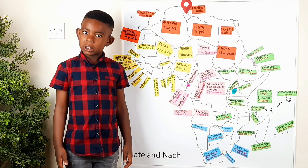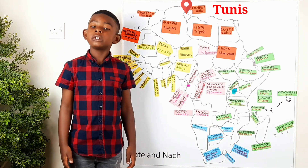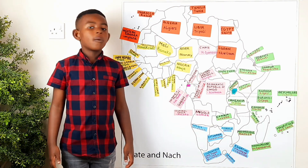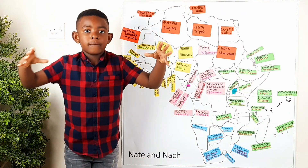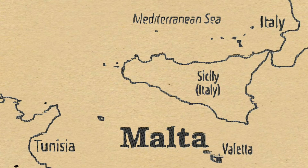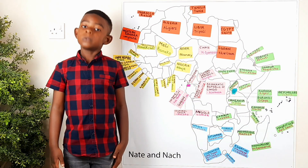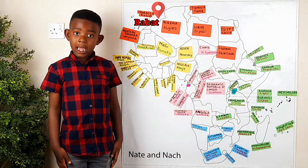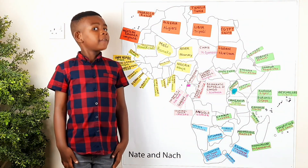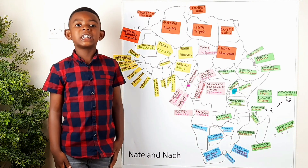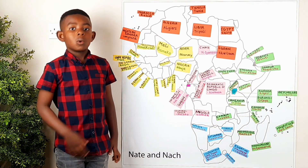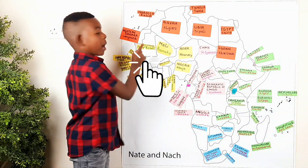Tunisia's capital is Tunis and Tunisia is the North African country which is very close to one of our European countries, Malta. Morocco's capital is Rabat and Morocco is known for the famous traditional belly dancing.